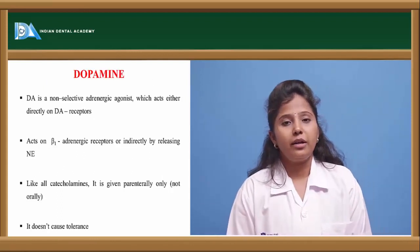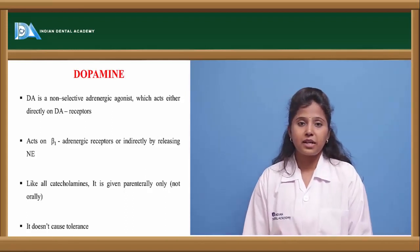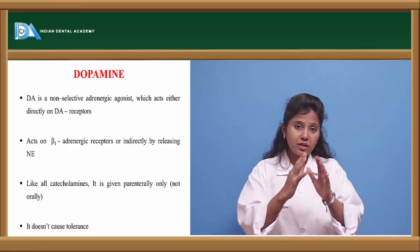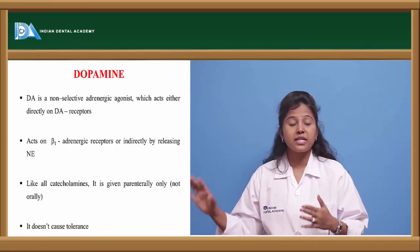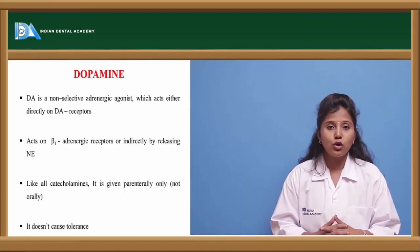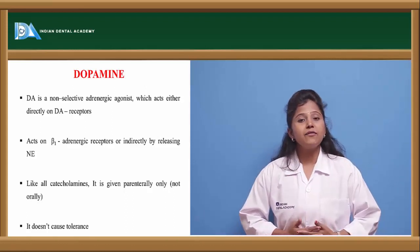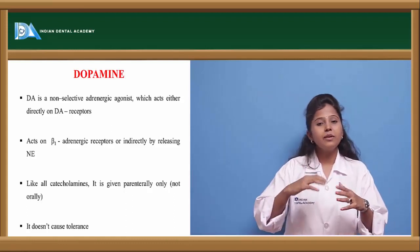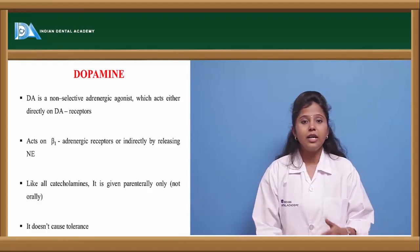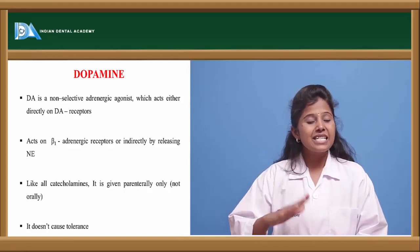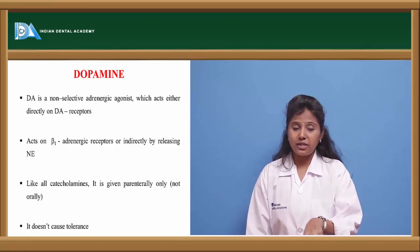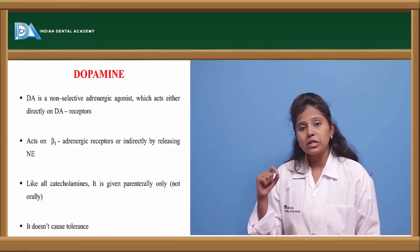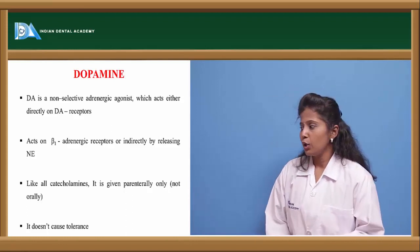Dopamine is also a directly acting non-selective adrenoreceptor agonist, binding to D1, D2, and D3 receptors. Apart from dopaminergic receptors, it also binds to beta-adrenergic receptors, which is why it is called non-selective. When dopamine binds to beta-1 receptors, it causes release of noradrenaline — it acts directly on dopamine receptors but indirectly on beta-1 receptors. Dopamine is given only through parenteral route and does not cause any tolerance effect.